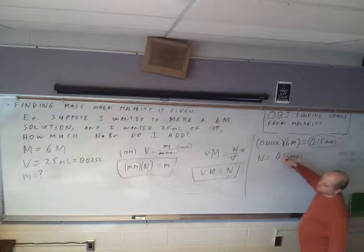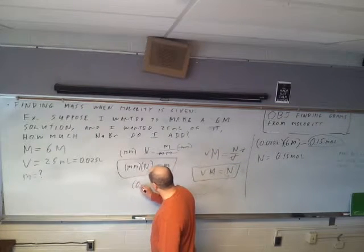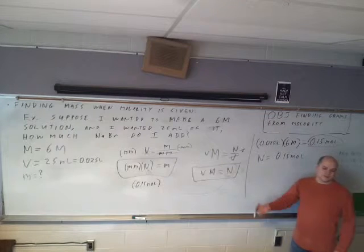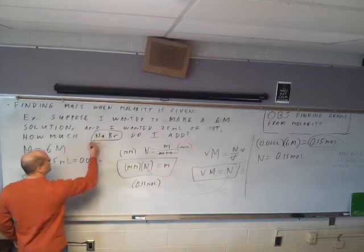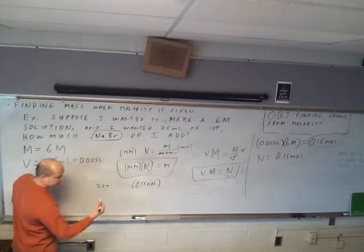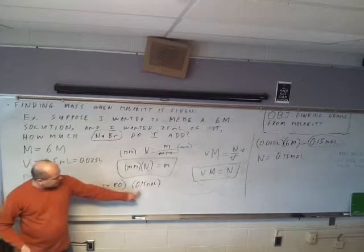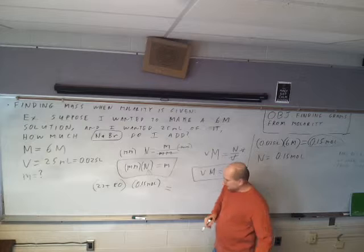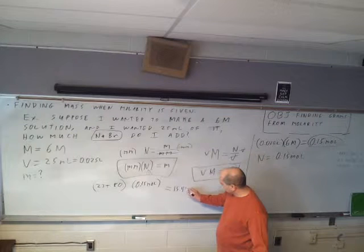So now we take this and plug it into the mass equation. It's 0.15 moles times molar mass, which will give us the mass of the stuff to measure out. The molar mass of sodium bromide: sodium is 23, bromine is 80, so that's 103 g/mol. So 103 times 0.15 gives us 15.45 grams.